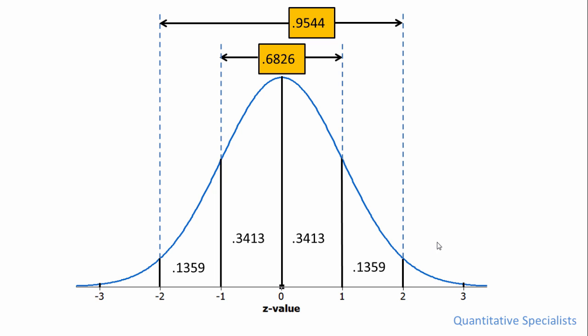Now let's go ahead and take a look at two more values. From 2 to 3 the proportion is 0.0215, and then as you know, since it's symmetrical, the proportion would be the same from negative 2 to negative 3.